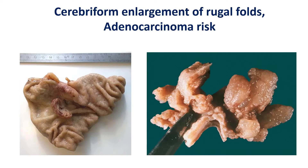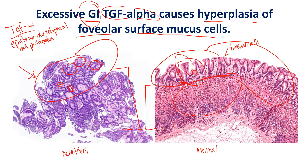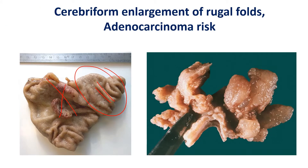Along with that comes cerebriform enlargement of the rugal folds. In the stomach, here are two pictures. Ignoring the polyp — let's just look at the rugal fold size. This shows a typical rugal fold size. These folds in the stomach are formed from the gastric pits going in and out repeatedly, and that's what ends up forming the rugae you're seeing. This shows the typical size and appearance of rugae throughout the stomach.